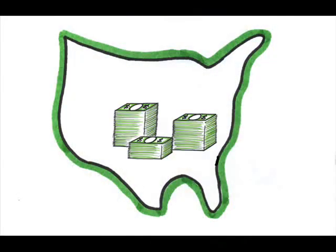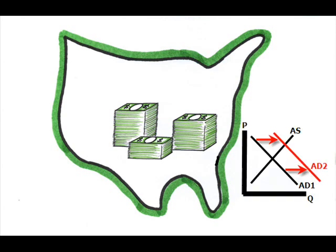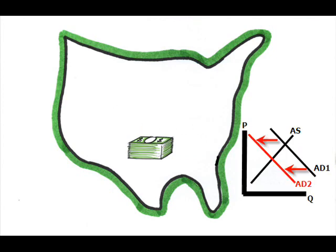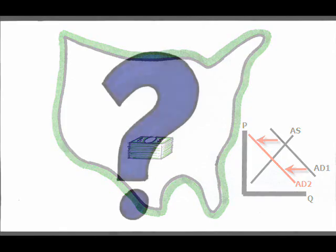Making more money available — expansionary policy — makes it easier to spend, so aggregate demand increases. Making less money available — contractionary policy — makes it more difficult to spend, so aggregate demand falls. The question now is: how does the Fed control or make changes to the money supply?